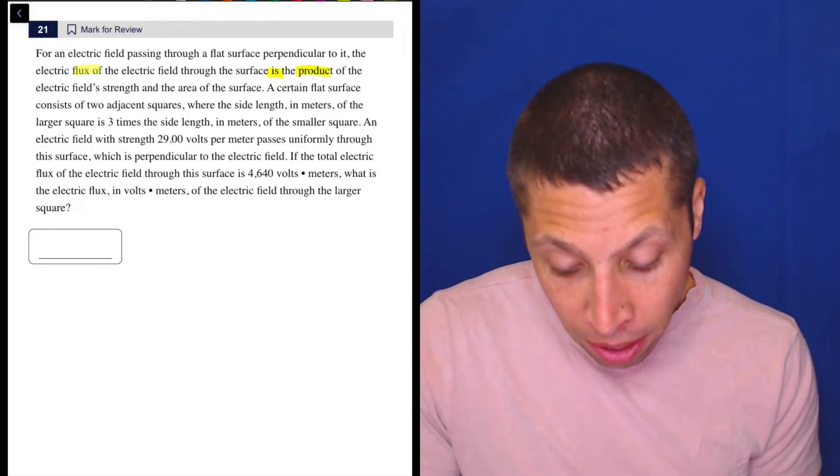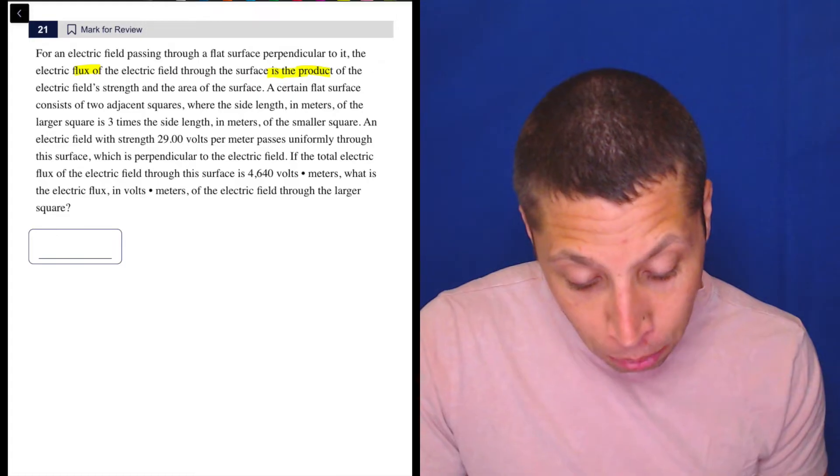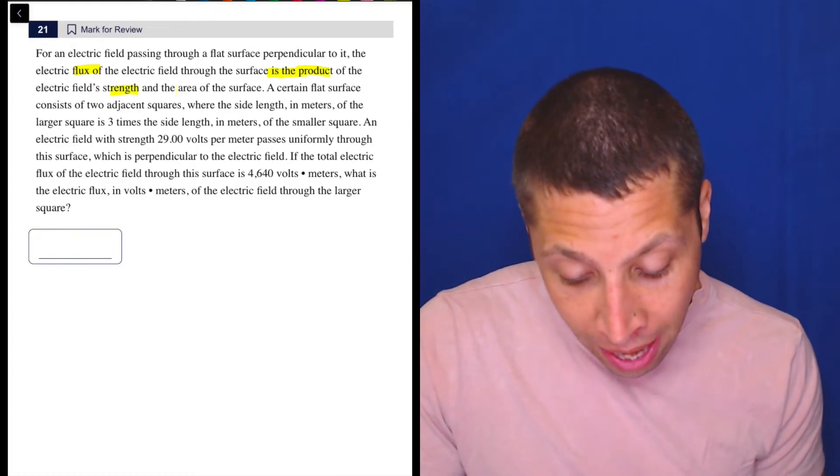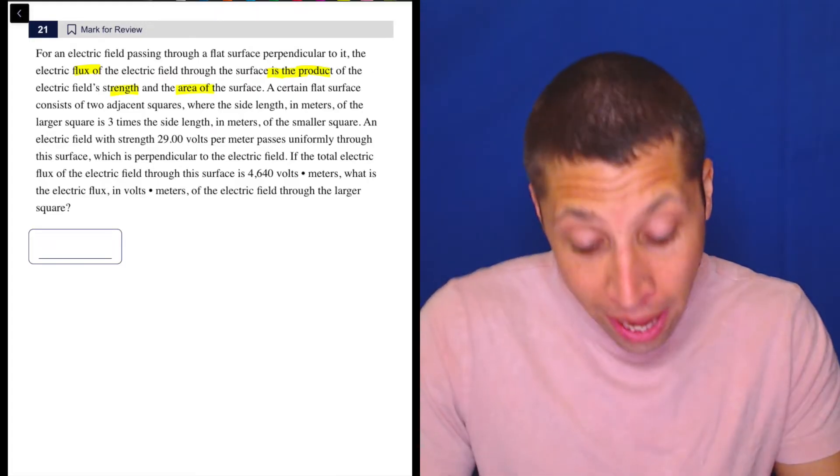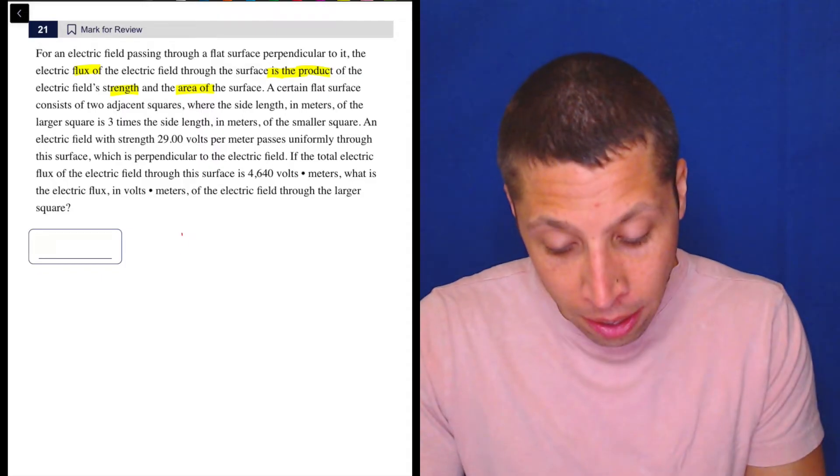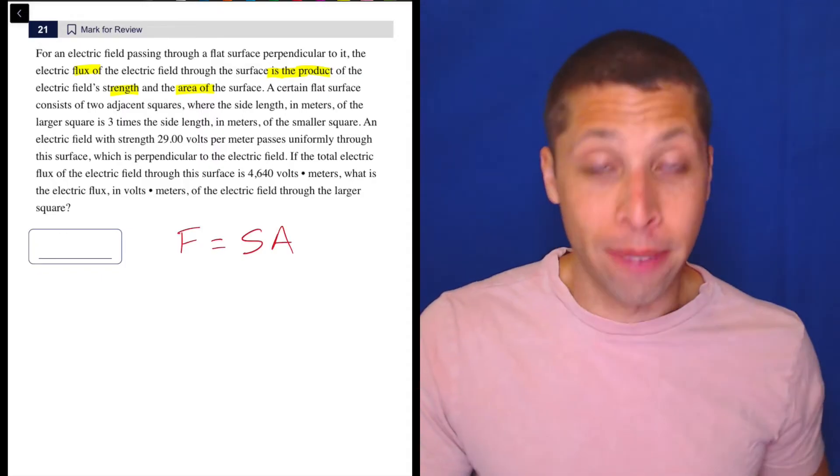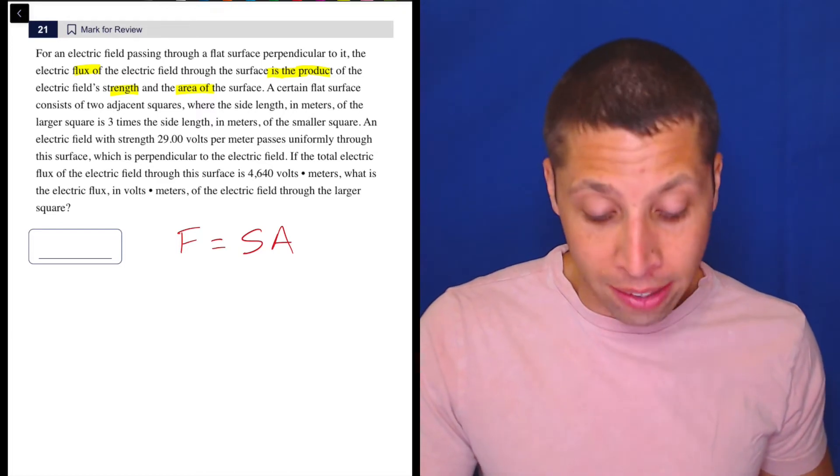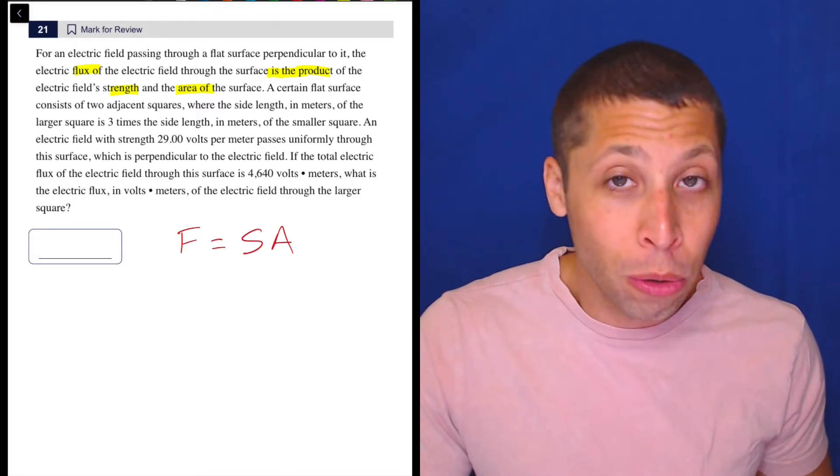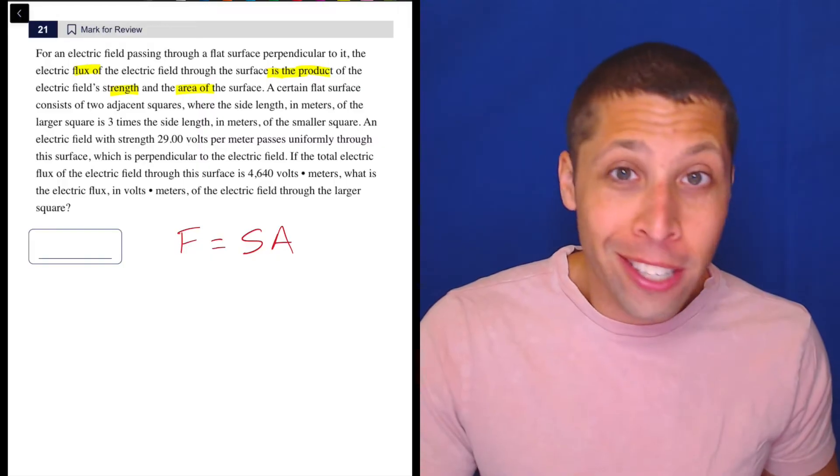So what do we really have? The flux is the product of the strength and the area. Let me just write that down. The flux is the product of the strength and the area. That's literally all I got out of that sentence. I have no idea what a flux is. I don't care.